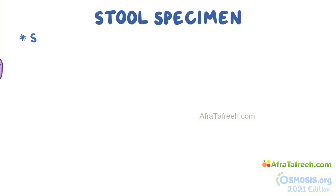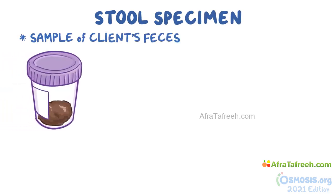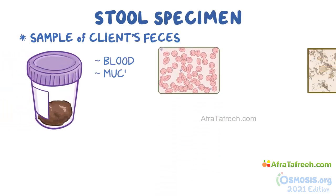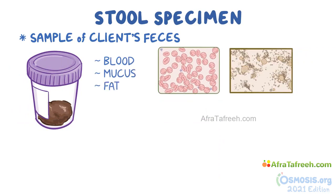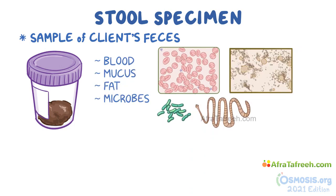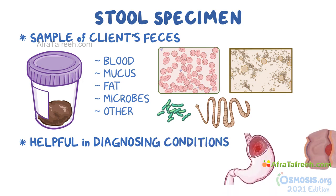A stool specimen is a sample of the client's feces. It can be analyzed for the presence of blood, mucus, fat, microbes such as bacteria and parasites, or other abnormal findings. Collecting a stool specimen can be helpful in diagnosing various conditions of the gastrointestinal system, such as ulcers and cancer.